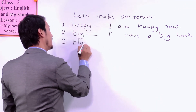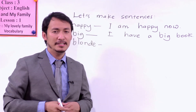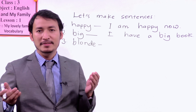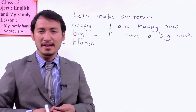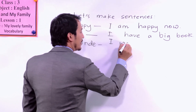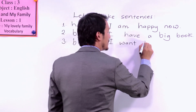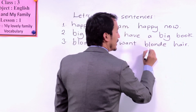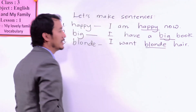Another word is blonde. Blonde is the word for describing what? Is it describing face? No. Is it describing appearance? No. It is a describing word for hair. Yes — hair. So you can say, 'I want blonde hair.' You can simply say, 'I want blonde hair.' So this is how you made your sentences with big, happy, and blonde.